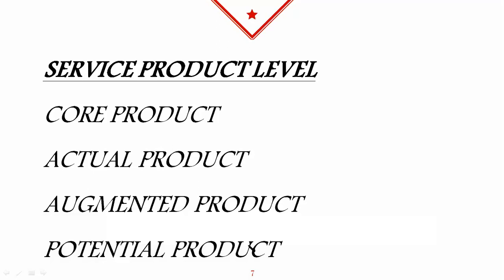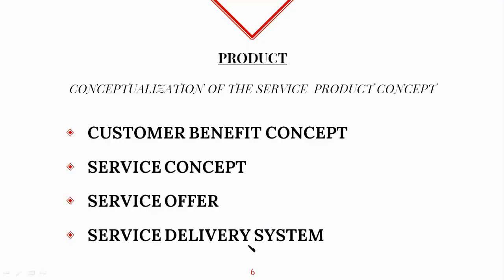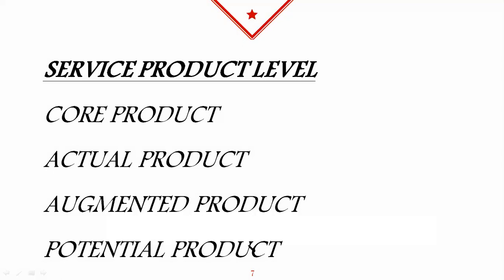The service product levels fall under the Service Concept. These are: Core Product, Actual Product, Augmented Product, and Potential Product. Core Product is the basic benefit the customer is buying — it defines why the business exists. For example, in a hospital the core product is treating patients; in an educational institution it is providing education to students. Actual Product means what the customers are actually getting — the service satisfaction they receive.